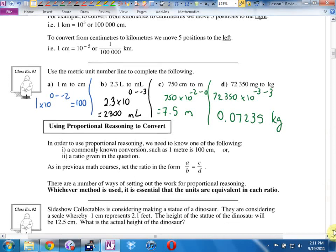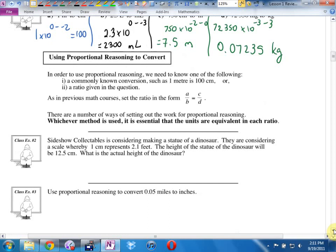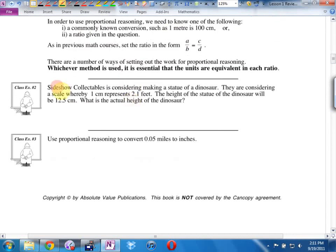Second topic is proportional reasoning. We call it cross-multiplying often. It says this. In order to use proportional reasoning, we need to know one of the following. A commonly known conversion, or a ratio given in the question. Let's go straight to example two. It says this. Sideshow collectibles is considering making a statue of a dinosaur. They are considering a scale whereby one centimeter represents 2.1 feet. The height of the statue of the dinosaur will be 12.5 centimeters. What's the actual height of the dinosaur?